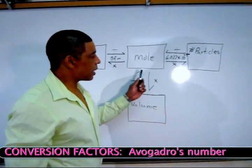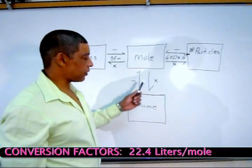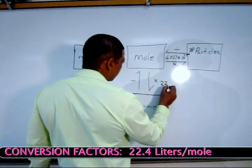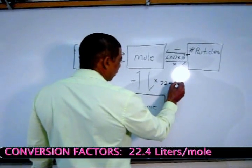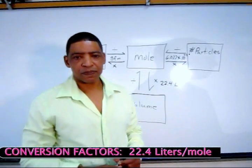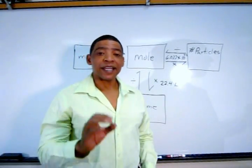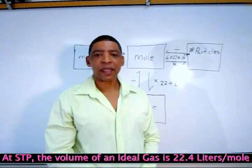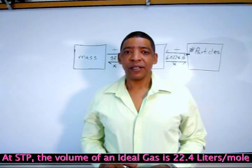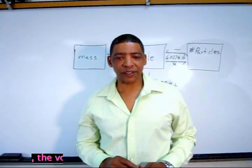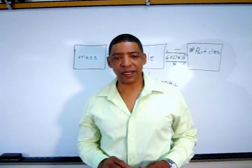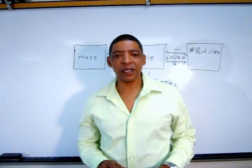Between the mole box and the volume box, we place 22.4 liters. Now 22.4 liters represents the volume of an ideal gas at STP, where STP conditions are 273 K, or 0 degrees Celsius, and 101.3 kPa, or simply 1 atmosphere.